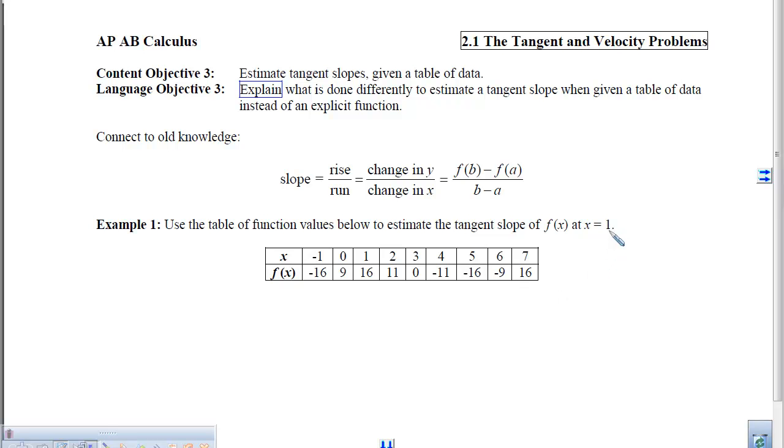So if this were an earlier objective, we would use 1 and the 16 that goes with it, and then we would select a point, either on the left or the right, that is super close to 1, plug it into the function, and then compute the slope.